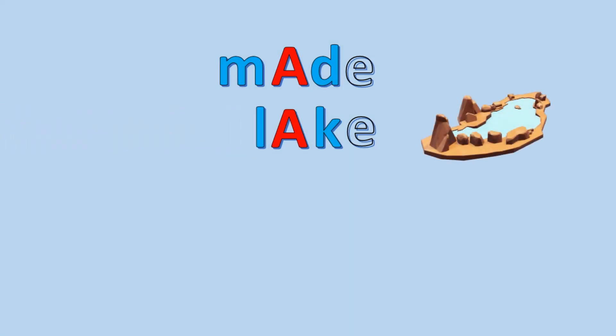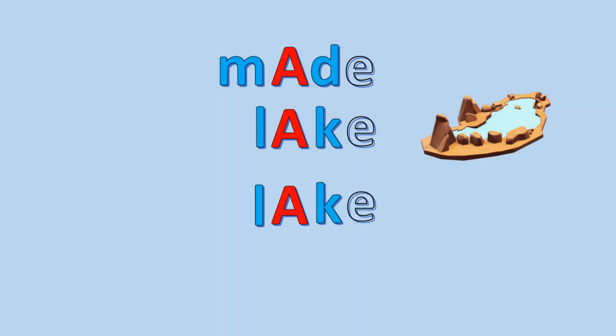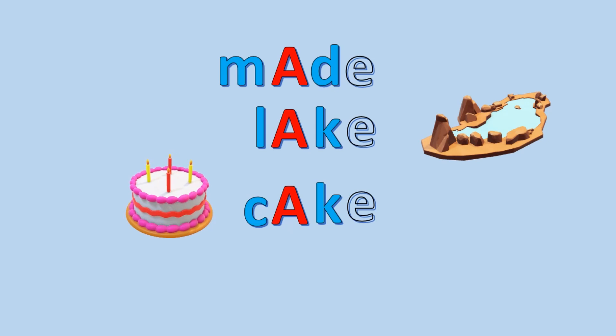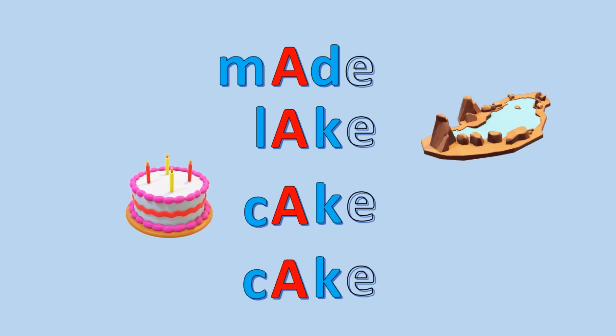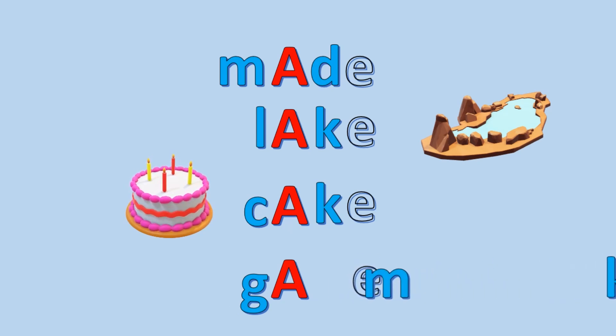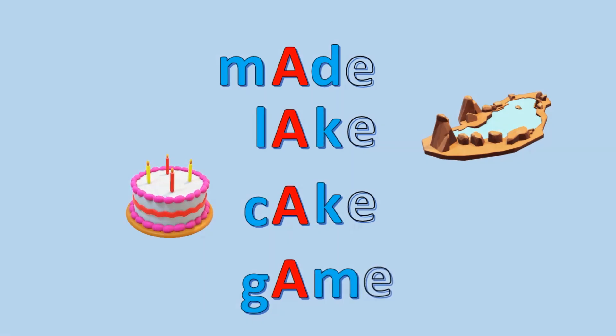Switch the M for an L and the word is lake. Switch the L for a C and the word is cake. Finally switch the C for a G and switch the K for an M. The three sounds now are G, A, M and the word is game.